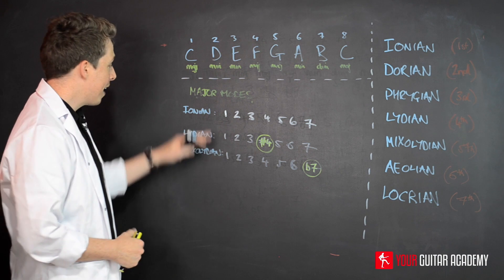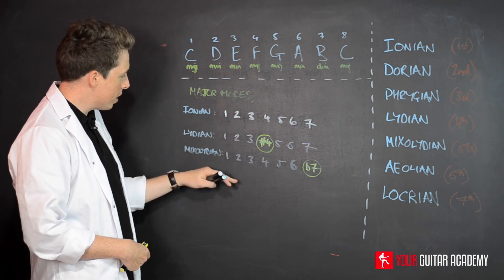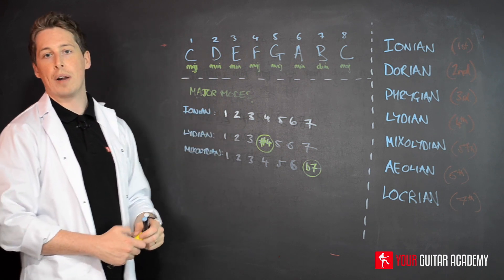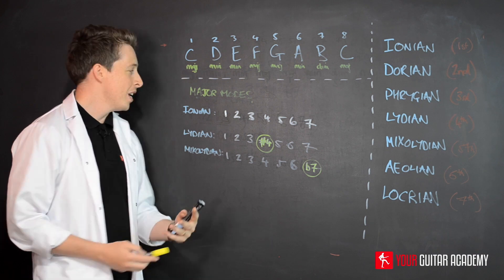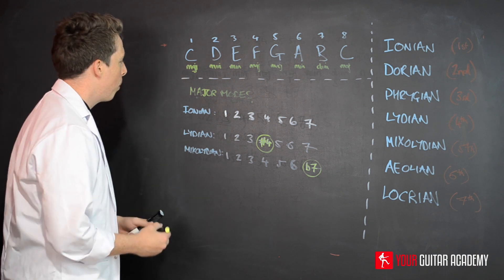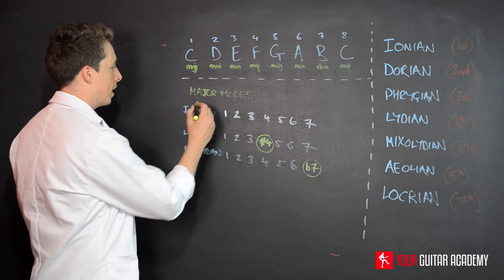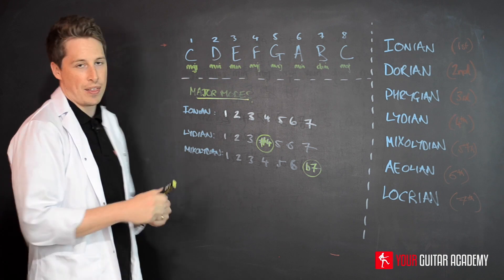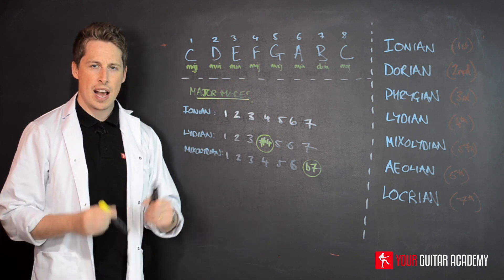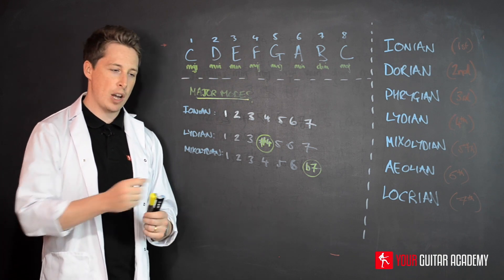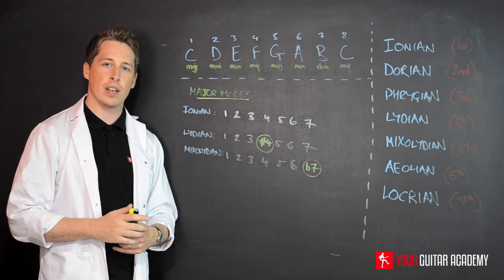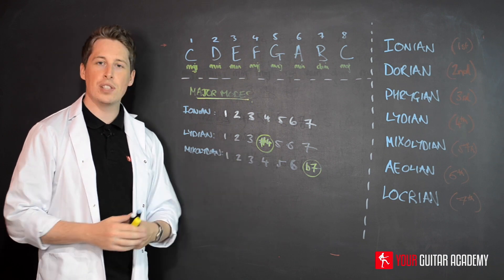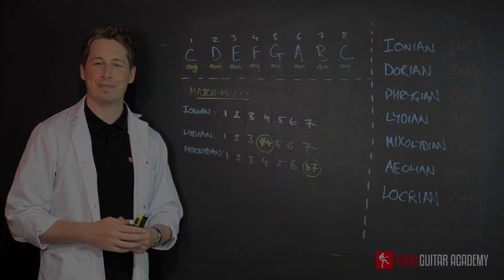Over major seventh chords, Lydian and Ionian are great; over a dominant chord, Mixolydian is great. And if it's just a plain major chord, in theory you can use all three. That's the point of having major modes grouped together, and hopefully that's opened a doorway for you to start putting this into your own playing.